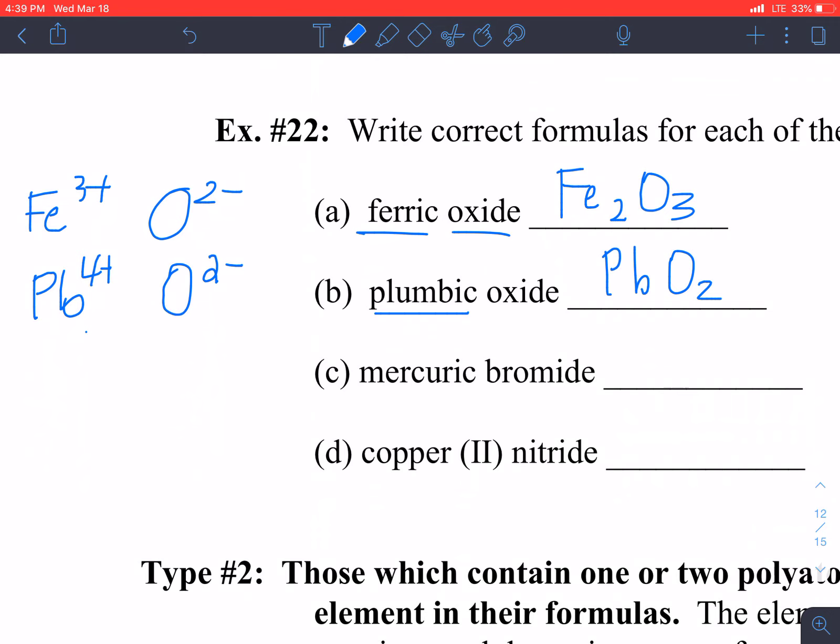Mercuric bromide. Let's see what that is. Mercuric is Hg2+, bromide is Br1-. And so my formula becomes HgBr2.